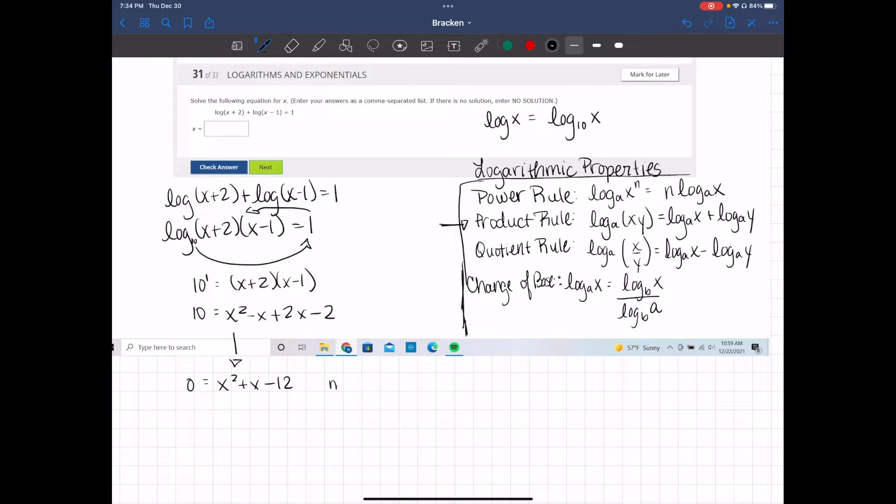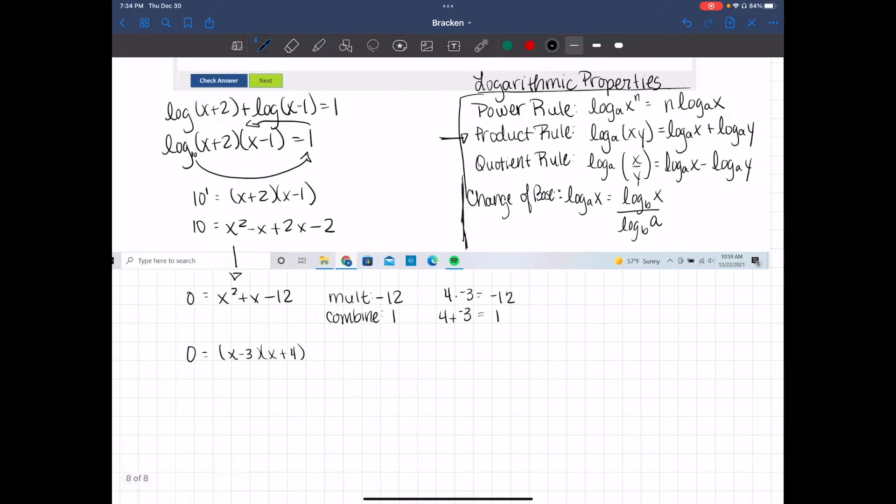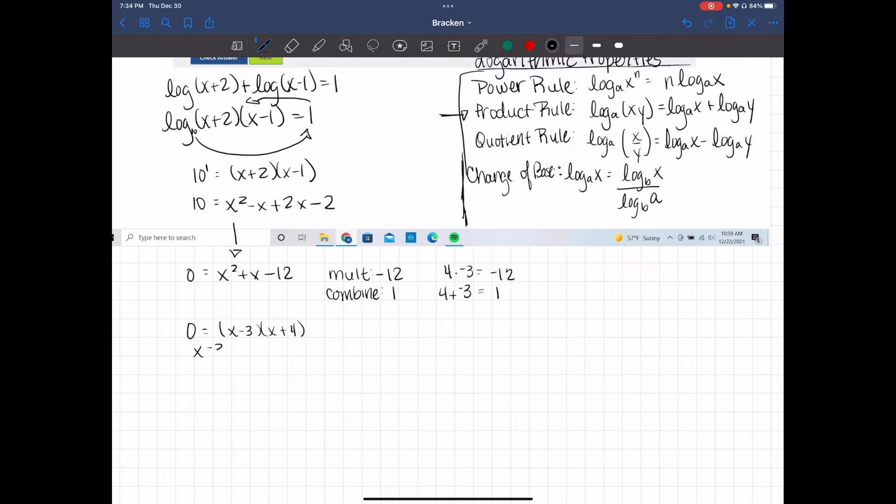So I'm looking for what multiplies to be negative 12 and will combine to be a positive 1. Well, I know that 4 times negative 3 does equal negative 12, and 4 plus negative 3 does equal a positive 1. So this becomes 0 equals x minus 3 times x plus 4. I'm going to set each part equal to 0. So I have x minus 3 equals 0, x plus 4 equals 0. That's going to give me x equals 3, x equals negative 4.